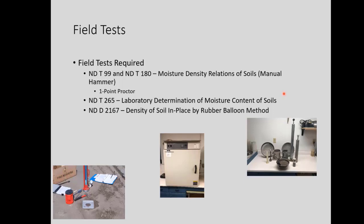Besides the proctor — which is quite involved — there's also a one-point proctor, which is an abbreviation of the full test. We're also going to talk about three different ways to take moisture of the soil, which is important out there too. The first one, NDT 265, is the laboratory determination of moisture content of soils.